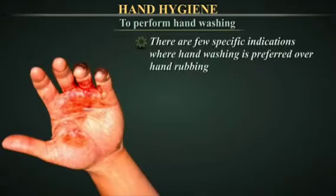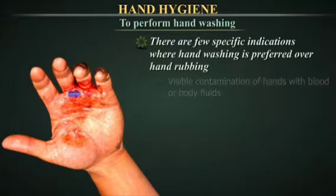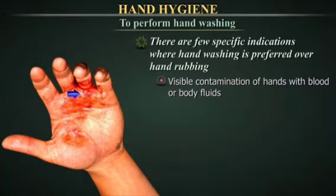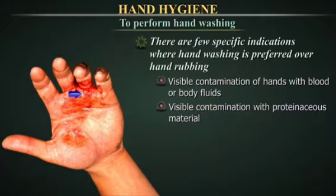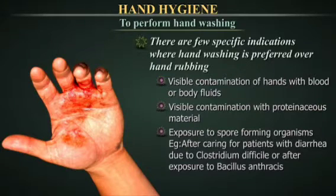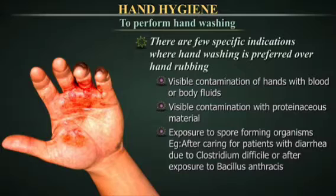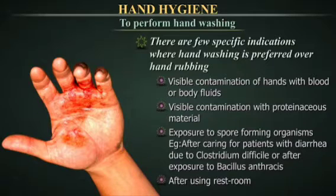There are a few specific indications where hand washing is preferred over hand rubbing: visible contamination of hands with blood or body fluids; visible contamination with proteinaceous material; exposure to spore-forming organisms, for example after caring for patients with diarrhoea due to Clostridium difficile, or after exposure to Bacillus anthracis; or after using the restroom.